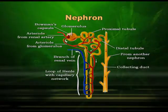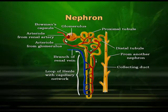I am showing you the diagram of the nephron. You can appreciate the glomerulus, Bowman's capsule, then coming down you can see the proximal tubule, loop of Henle, distal tubule, and collecting duct.